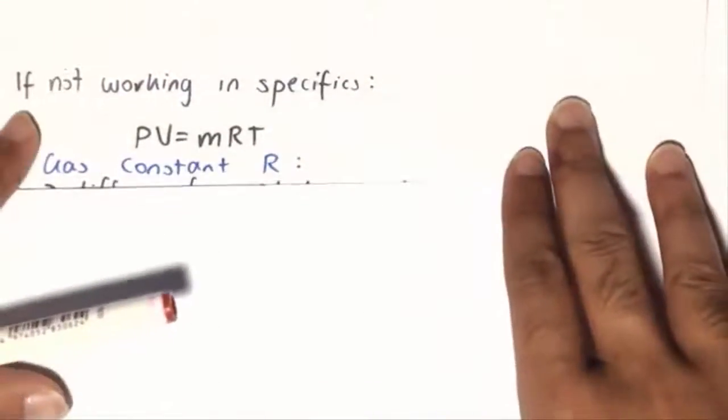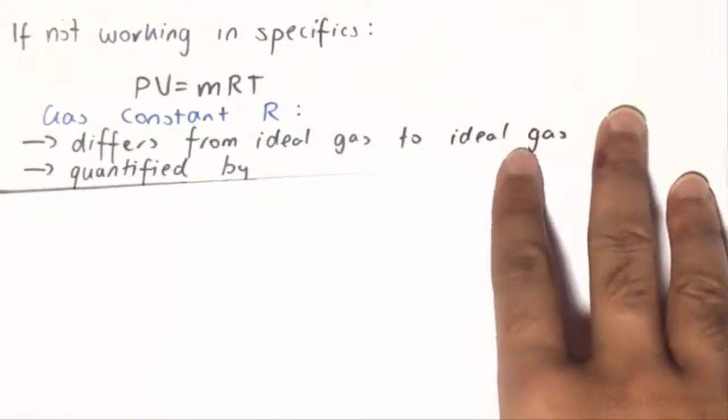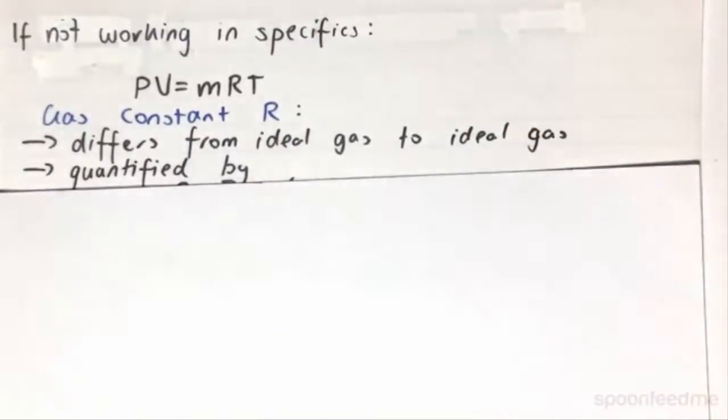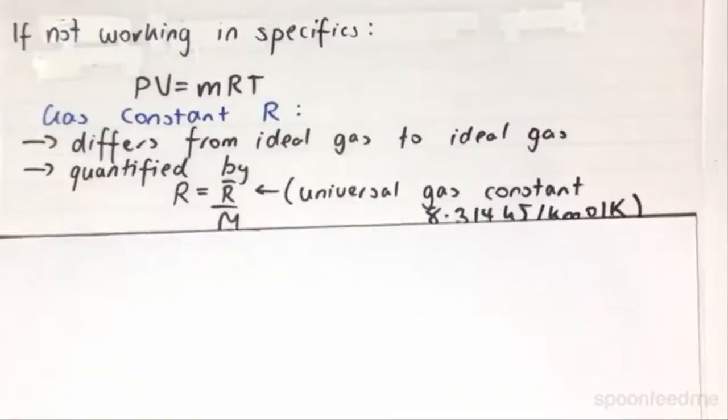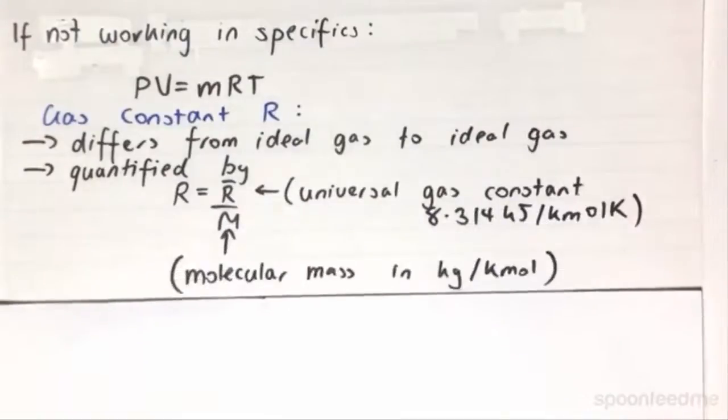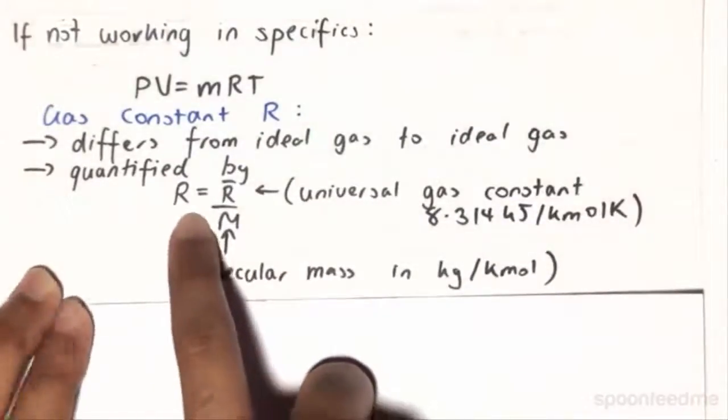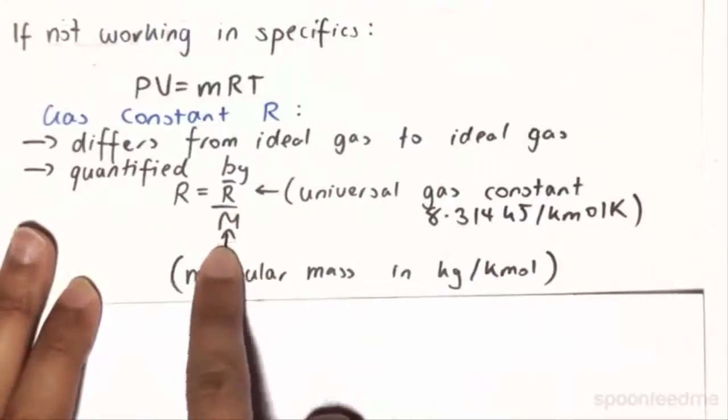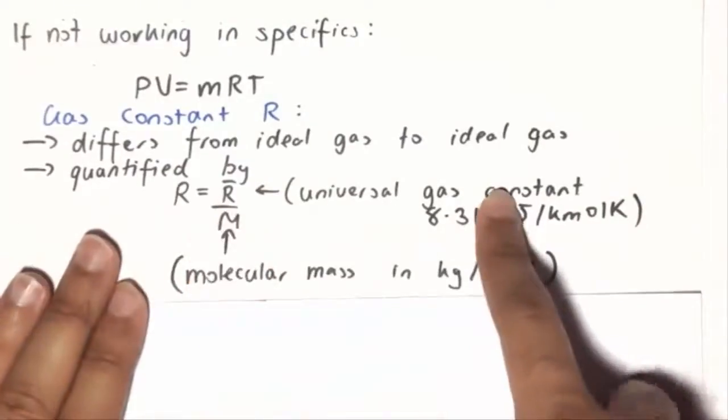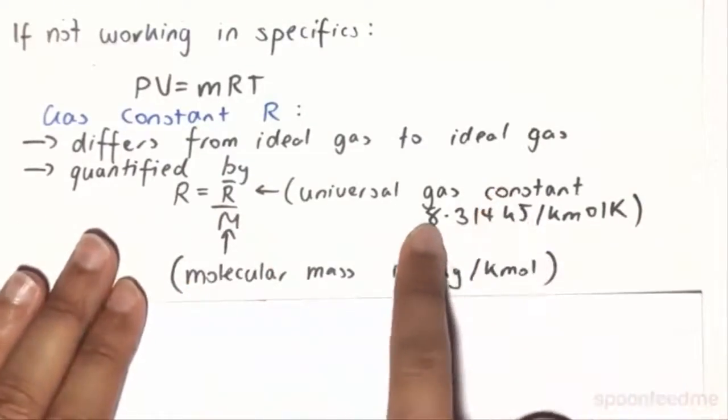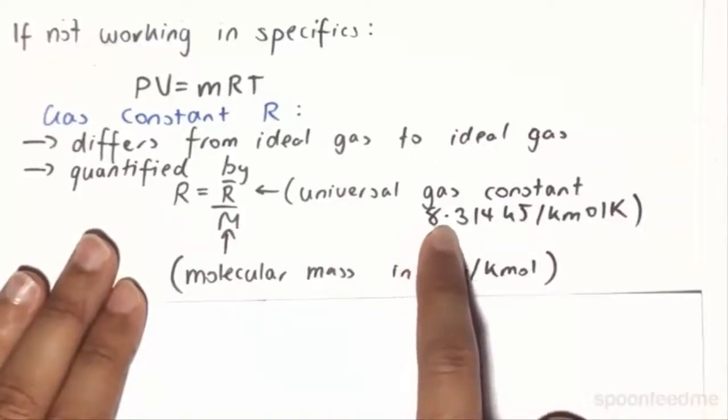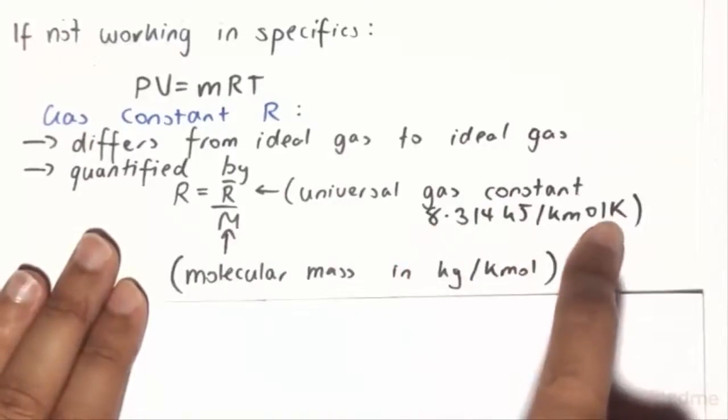So what is this gas constant R? The gas constant R differs from ideal gas to ideal gas. And it is quantified by this relation over here, where R is equal to R bar over M. R bar is the universal gas constant, which is 8.314 kilojoules per kilomole Kelvin.